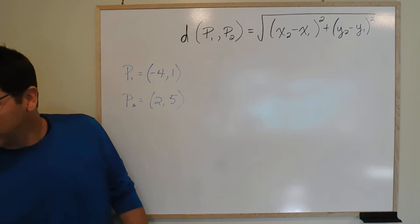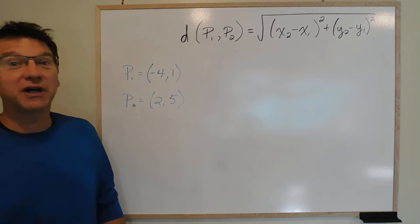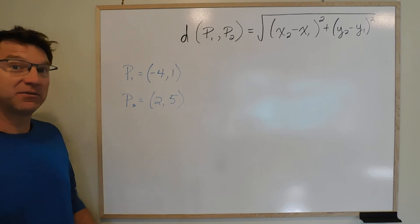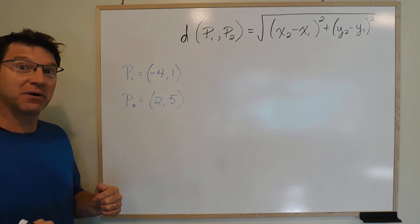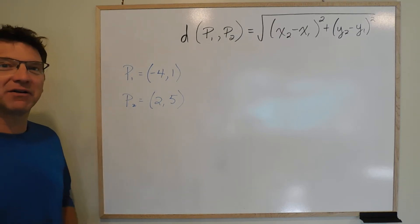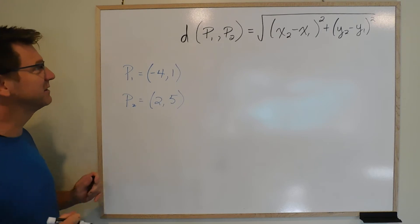This question here, if I read it, it says round your answer to 2 decimal places if necessary. And in this case, remember the last video, I left it as a square root of 45. But I couldn't do that in this video because it's going to tell me to round it to 2 decimal places. So let's see what we have here.